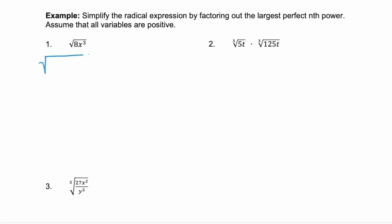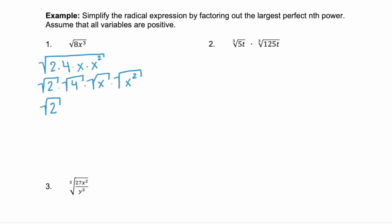Here we have the square root of 8 times x cubed. Well, 8 is the same as 2 times 4, and x cubed is the same as x times x squared. We can now break this into four separate radicals — the square root of 2, times the square root of 4, times the square root of x, times the square root of x squared.